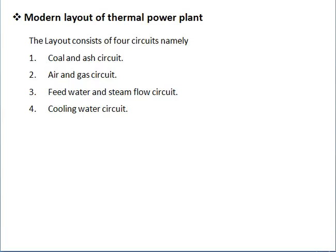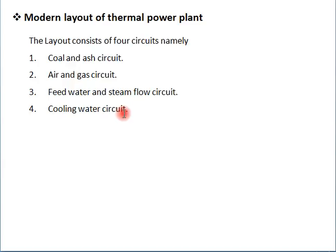In the Modern Thermal Power Plant, it mainly consists of 4 circuits. The whole power plant is divided into 4 circuits: first is the coal and ash circuit, second is the air and gas circuit, third is the feed water and steam flow circuit, and fourth is the cooling water circuit. We will study these 4 circuits with the help of a figure to understand the modern layout of the thermal power plant.